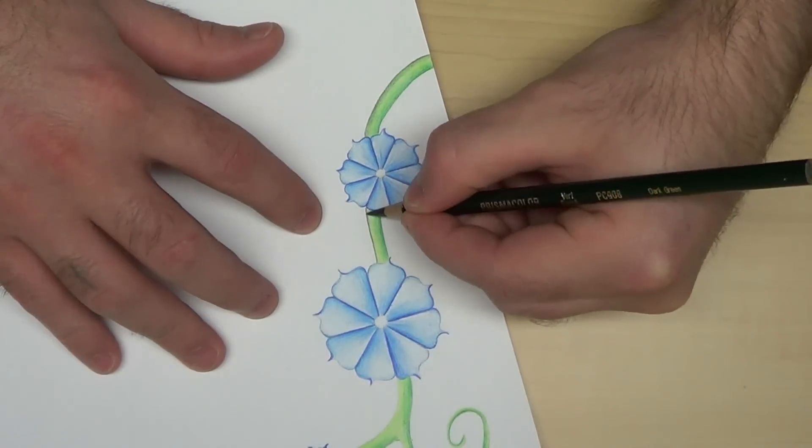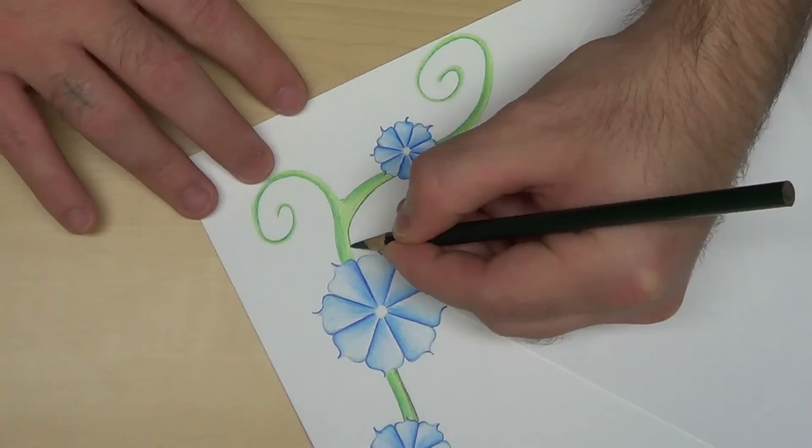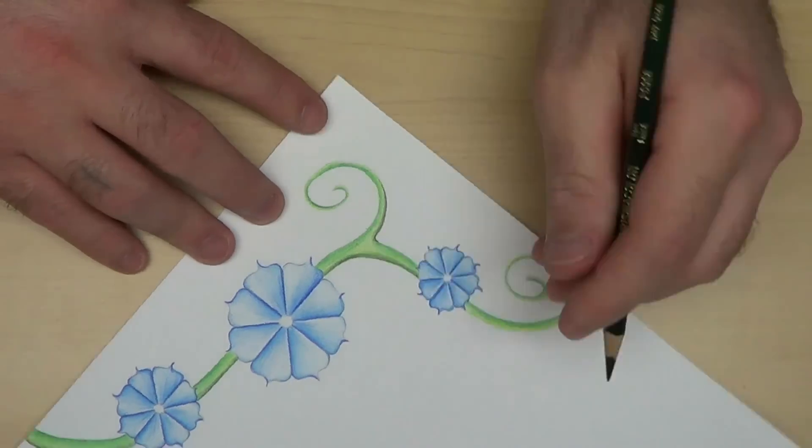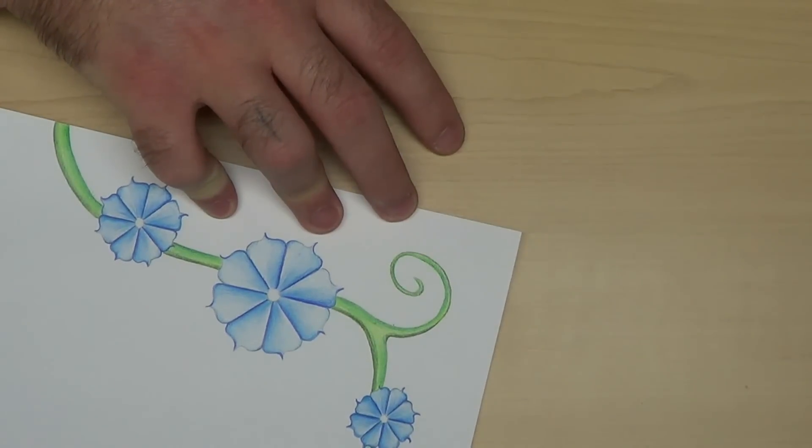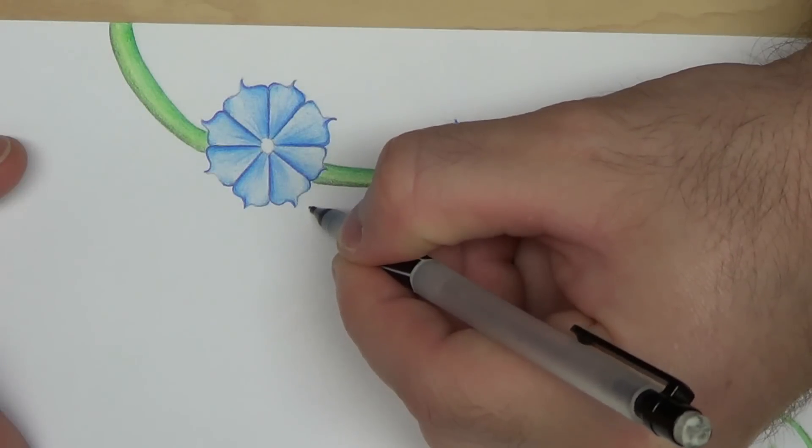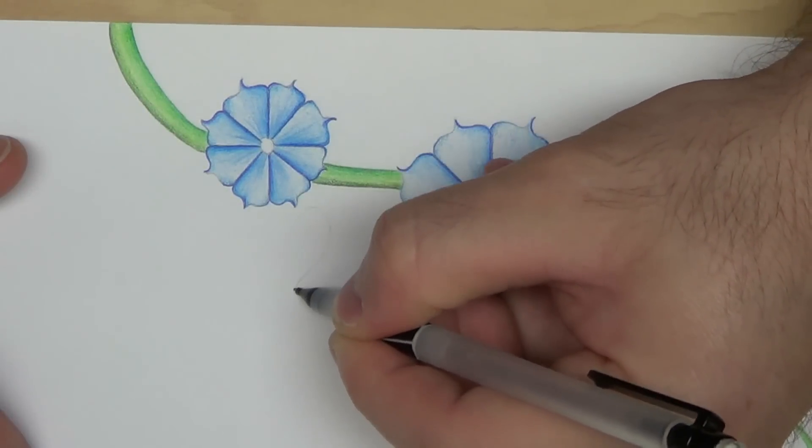I only filmed one flower section, the larger one. If I were to do this again, I would actually move this larger flower section further towards the corner and maybe make it a little smaller.